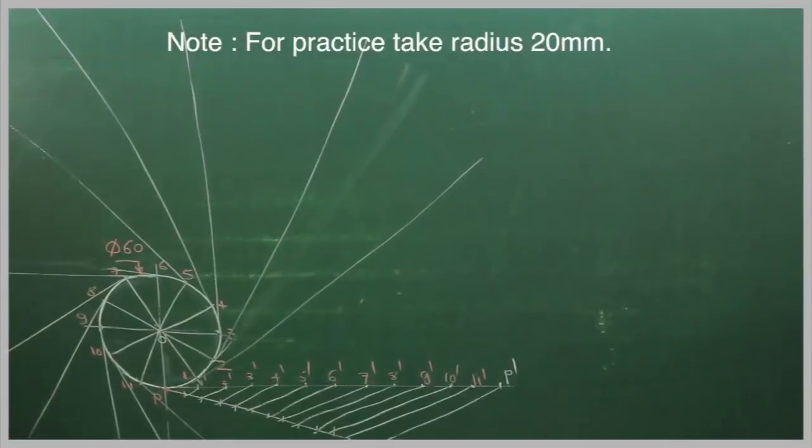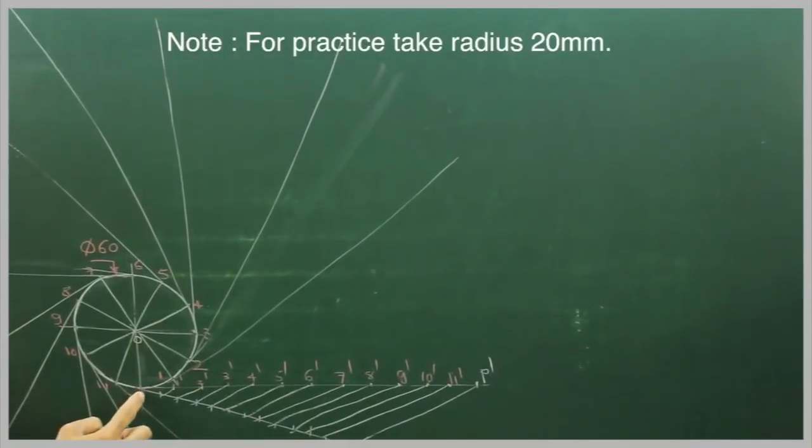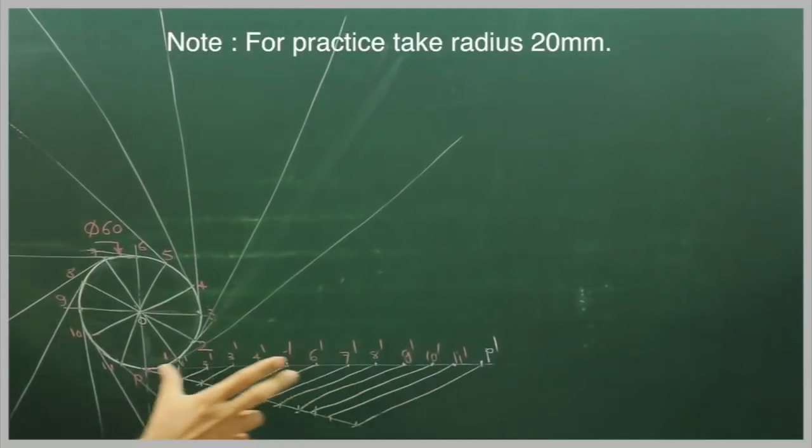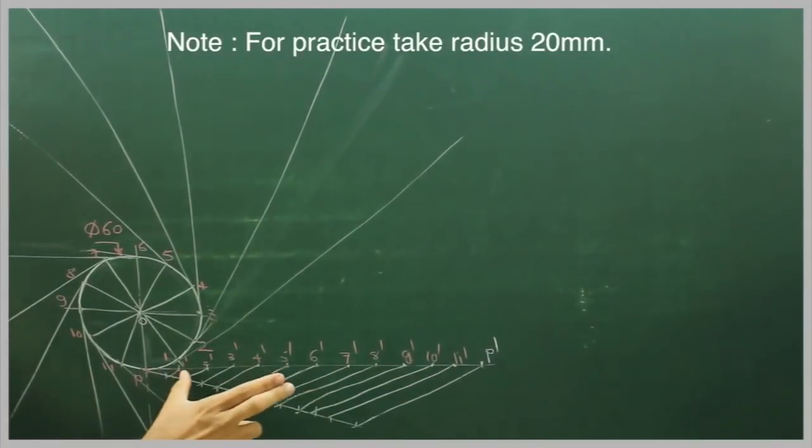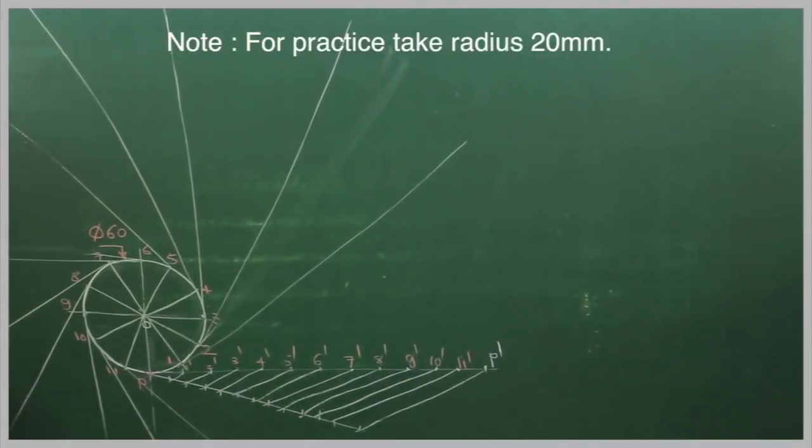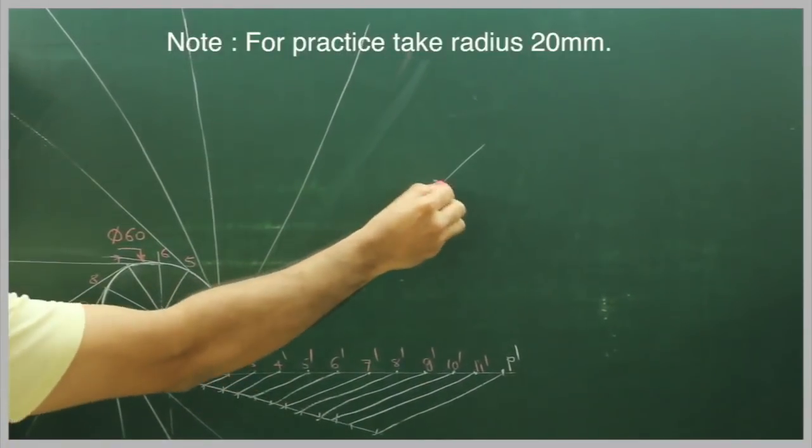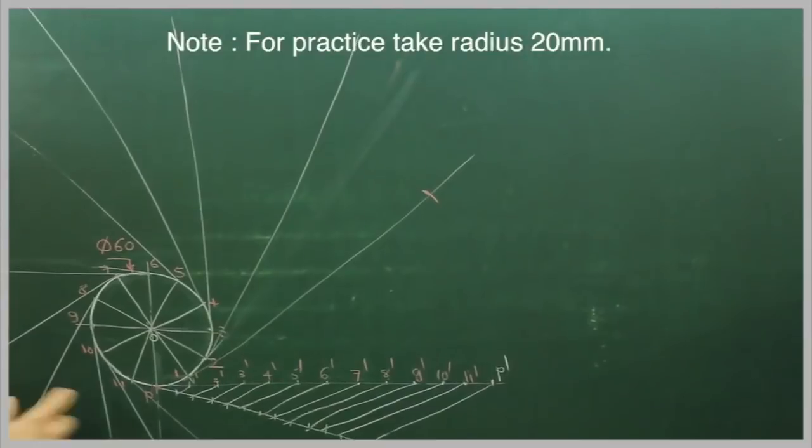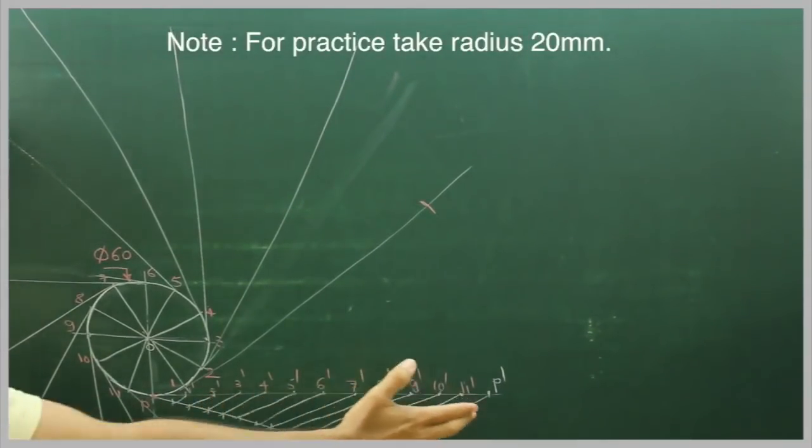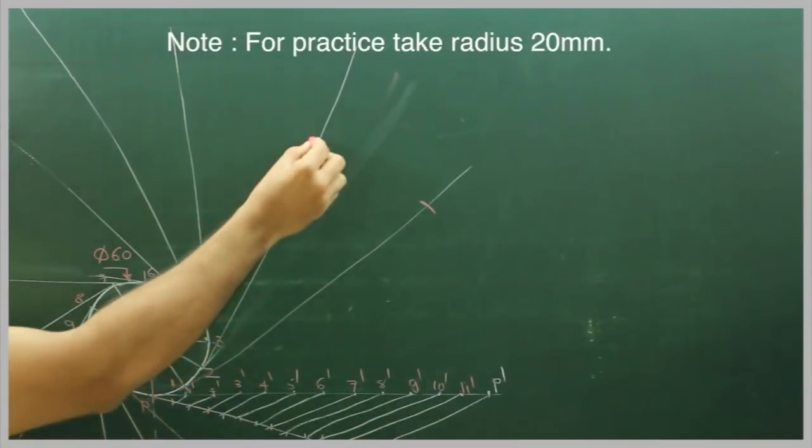Now after this, we have already marked P to P'. Now we take 1' to P', same like dividing. We take 1' to P' and we will cut from 1. Then 2' to P', we'll take distance 2' to P' and we will cut from 2.